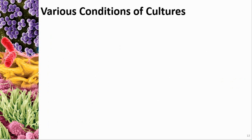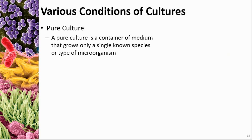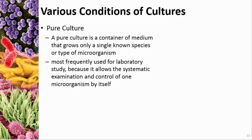There are some different terms to describe culture situations. What we're ultimately trying to get to is a pure culture, which means there is only one species growing in it. This is the most common type used in the lab because it allows us to study one type of microbe and see how it reacts to different things.